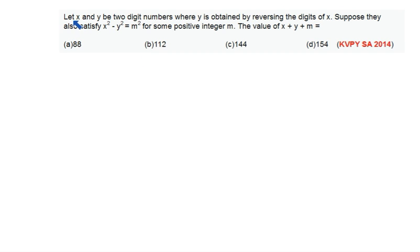The statement of the question is: let x and y be two digit numbers where y is obtained by reversing the digits of x. Suppose they also satisfy x² - y² = m² for some positive integer m. We need to find the value of x + y + m.